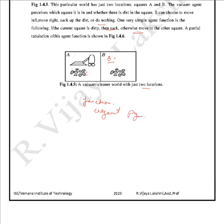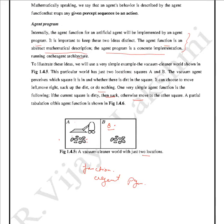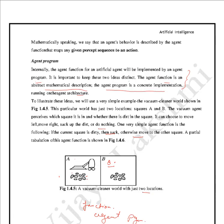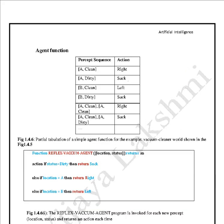The agent program includes a sequence of steps and rules. Based on the program, the agent decides its behavior. For the vacuum cleaner: percept (A, Clean) → action is Move Right; percept (A, Dirty) → action is Suck; percept (B, Clean) → action is Move Left; percept (B, Dirty) → action is Suck.